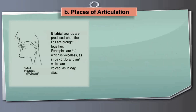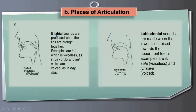Number one: bilabial sounds. Bilabial sounds are produced when the lips are brought together. For example, P as in 'pay' is voiceless, while B as in 'bay' and M as in 'me' are voiced. When the lips come together and we pronounce these sounds, they are called bilabial sounds. Number two: labiodental sounds are made when the lower lip is raised towards the upper front teeth — for example, F as in 'safe' (voiceless) and V as in 'save' (voiced).